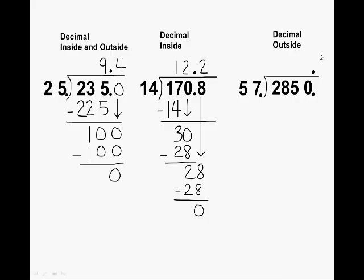With the last example, we can fit 57 into 285 exactly 5 times. The product of 5 and 57 is exactly 285. The difference between 285 and 285 is of course, you guessed it, zero.